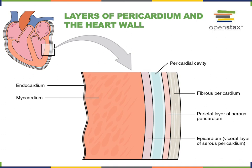The outermost layer is the fibrous pericardium, which consists of dense irregular connective tissue that helps to anchor the heart in place and provide a strong, protective outer coating surrounding the heart.